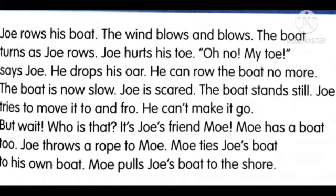'Oh no, my toe,' says Joe. So when he was hurt, he is telling about his toe because it is very painful. He drops his oar. 'He' is a pronoun, so the sentence starts with a singular pronoun, and 'drops' is followed by the plural verb form. He drops his oar. Something is there in his hand to row the boat — that is called the oar, O-A-R. He can row the boat no more. Because the oar is not there, without anything to help he cannot row. The oar was dropped, so now he can row the boat no more.